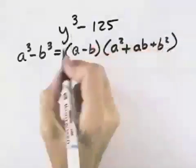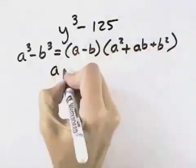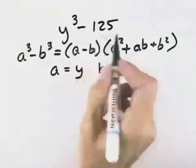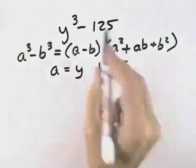So we need to recognize that a is the cube root of the first term, which is y, and b is the cube root of the second term, which is 5, because 5 cubed equals 125.